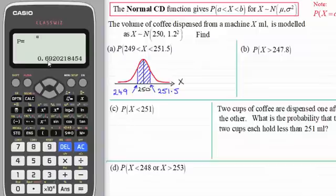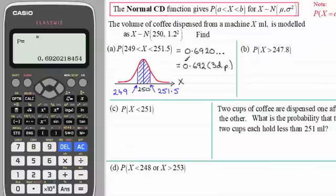And now when we press equals again we'll get that probability that's shaded here in blue: 0.6920 and so on. So if we just put that in and round it to three decimal places, that's going to equal 0.692.